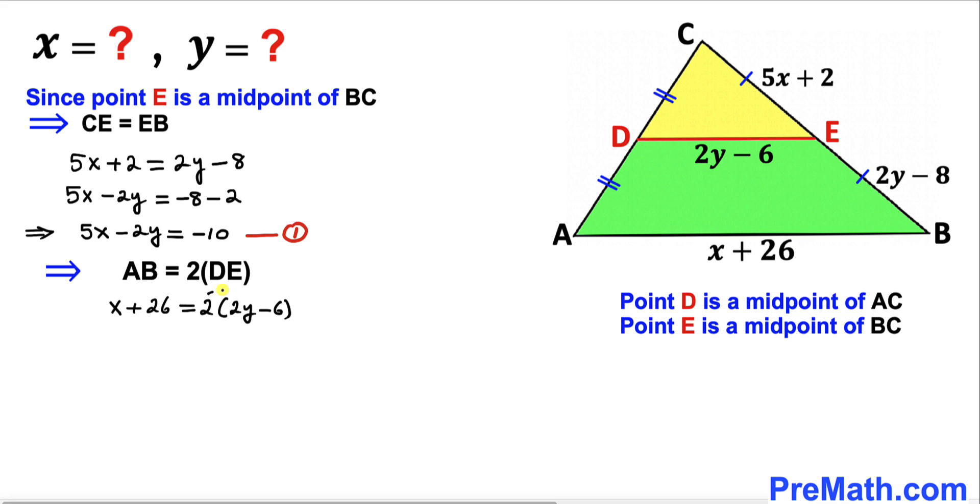Let's distribute this 2. So we get x plus 26 equals 4y minus 12.